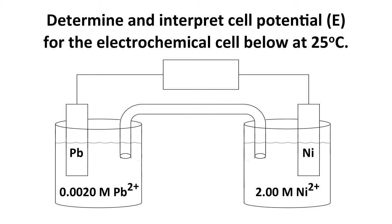So let's give this a try with a specific example. The question here is to determine and interpret cell potential E for the electrochemical cell below at 25 degrees Celsius. Our cell is a lead, lead two plus half cell on one side, a nickel, nickel two plus half cell on the other, but notice we have non-standard conditions. We have a 0.002 molar lead two plus solution and a two molar nickel two plus solution.